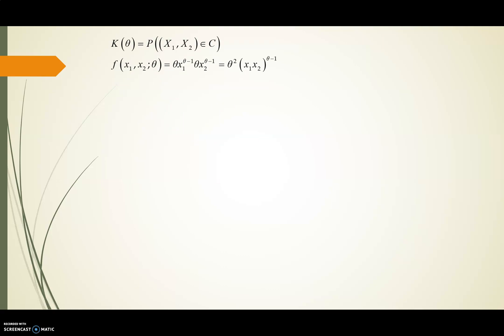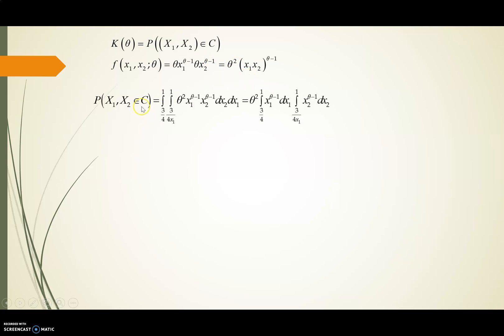K(theta) equals the probability that (X1, X2) belongs to C. The joint PDF f(X1, X2) is theta * X1^(theta - 1) * theta * X2^(theta - 1), simplified as theta^2 * X1^(theta - 1) * X2^(theta - 1). We integrate with respect to X2 and X1. The critical region is (3/4) ≤ X1, X2, which can also be written as (3/4/X1) ≤ X2 ≤ 1.